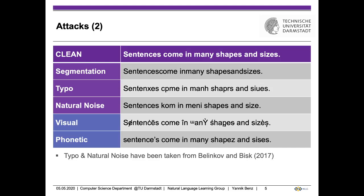The next attack is the visual attack, based on an existing implementation called Viper. It replaces letters with respect to a given embedding space. The last and final attack is the phonetic attack. Here we combine two sequence-to-sequence models, where the first model translates graphemes into their respective phonemes based on a complex pronunciation dictionary, and the second model translates back to graphemes. This way we can generate new but phonetically similar words and sentences.